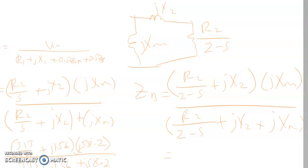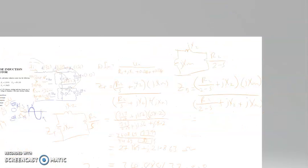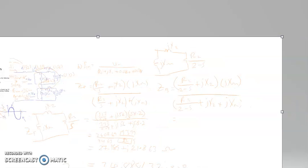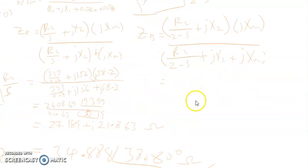You calculate this. You should get the values. You put in your R2 which is 3.13 divided by 2 minus S which is 0.07 plus J, so it's J1.56. Then you solve this one first. You mix or add to the J and then you times your JXM which is 58.2.